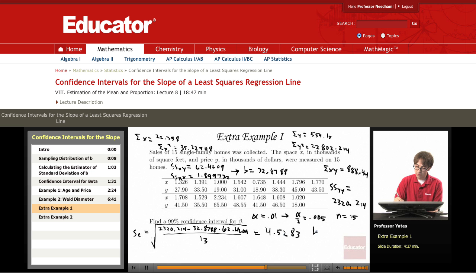For the confidence interval, I want t alpha .005 with 13 degrees of freedom. This gives me 3.012.